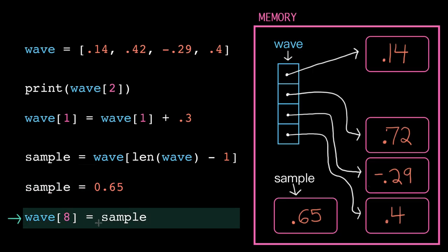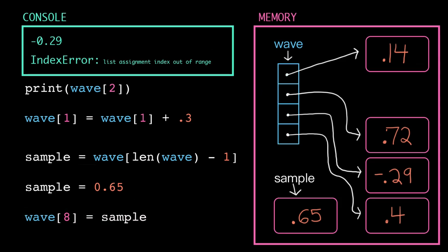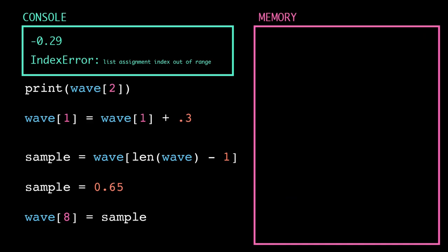Last line. We grab the value for sample and substitute it in. We are ready to store, but where? Well, the left hand side tells us to go find the variable wave and then move an offset of 8. 1, 2, 3, okay, and we ran out of slots. So what happens? That's going to be an index error. So the computer will display that in the console, and then immediately terminate the program because it doesn't know what to do. And as always, when we terminate a program, the short-term memory gets cleared.